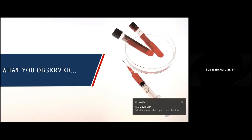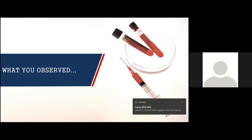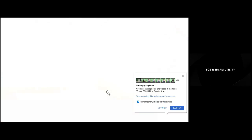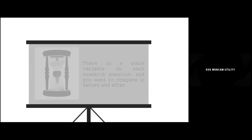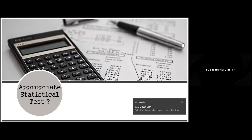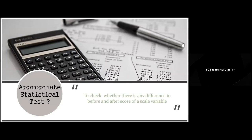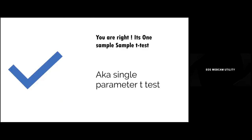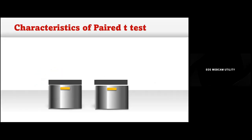Is it clear to other participants about this conversion of ordinal scale into a continuous one? In all these cases, what have you observed? There is one continuous variable and we are measuring it at two points of time, before and after. The appropriate statistical test would be a paired t-test, also known as a single-parameter t-test.